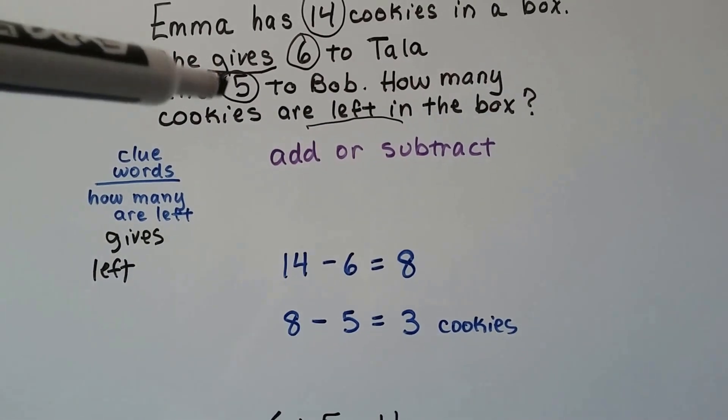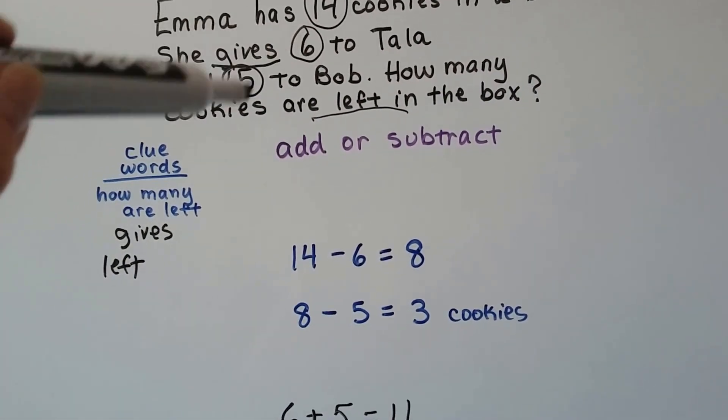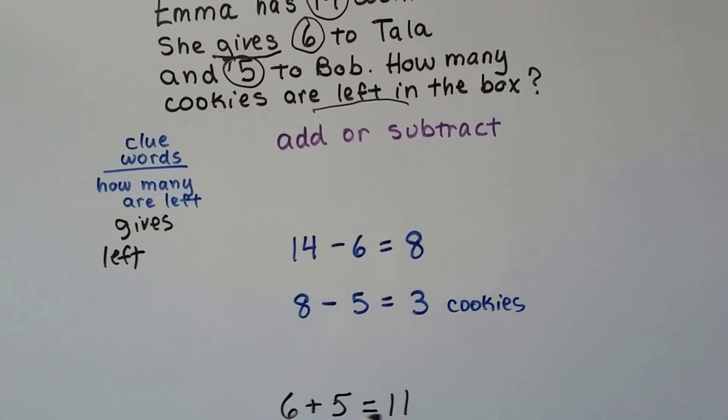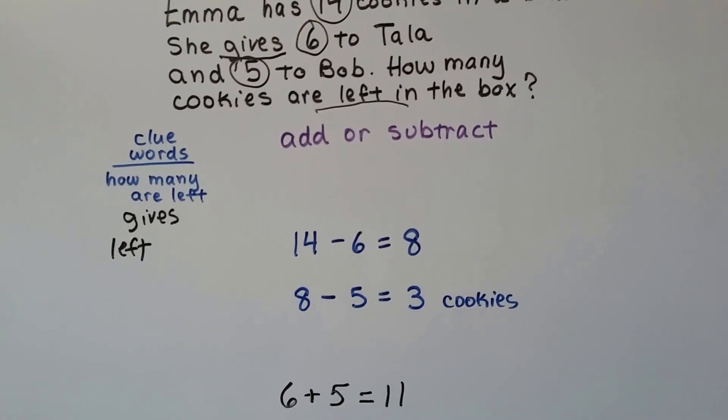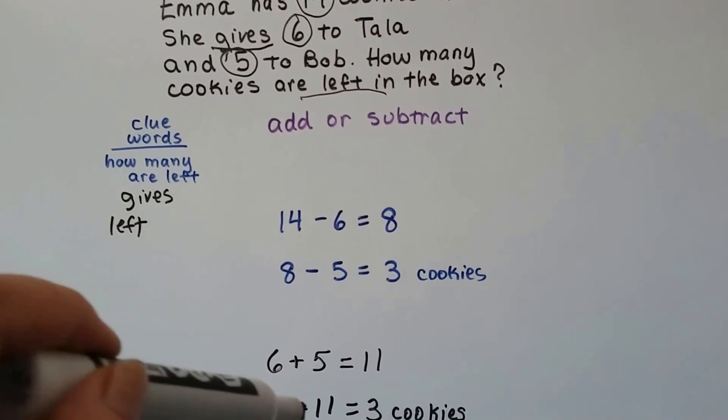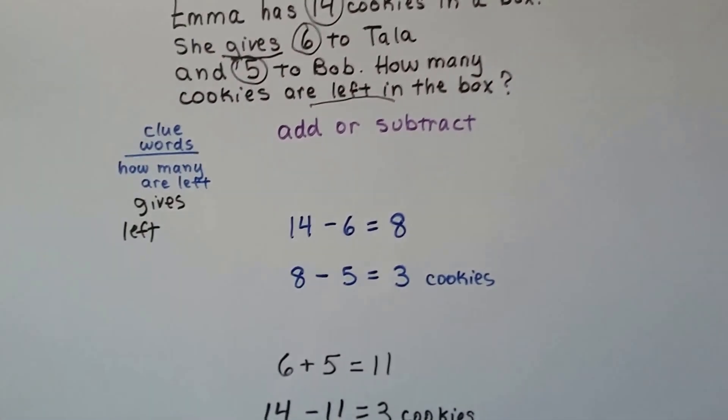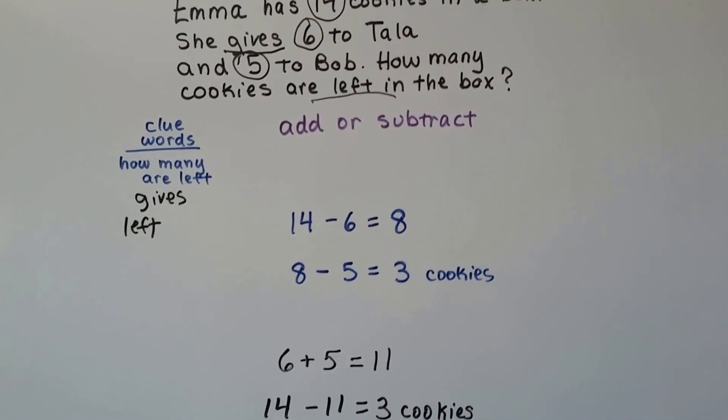Now there's another way to solve this. We can add the cookies that she gave away. The five plus the six. Six plus the five and get eleven. And then we can subtract the eleven from the 14 cookies that were in the box to get three cookies.